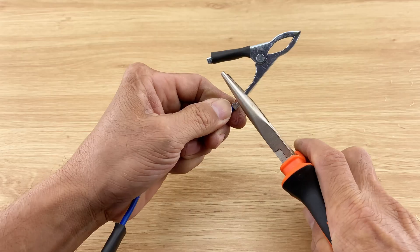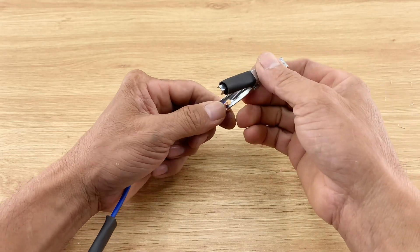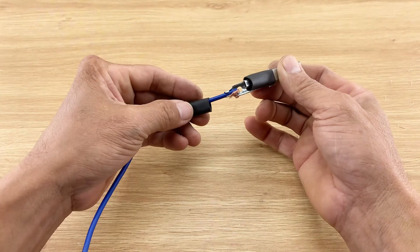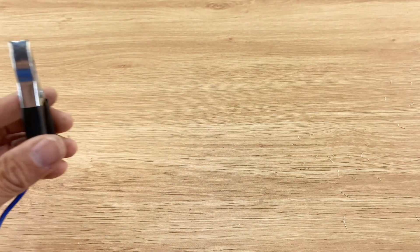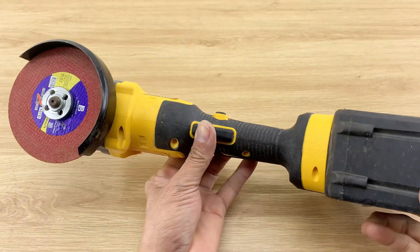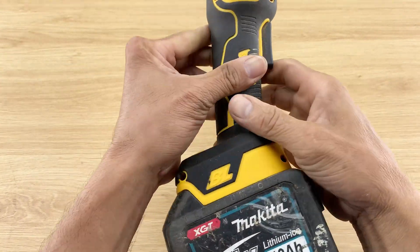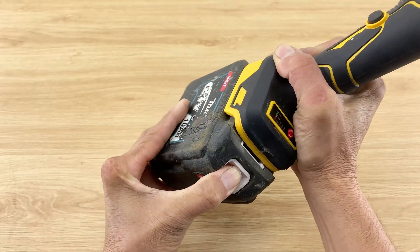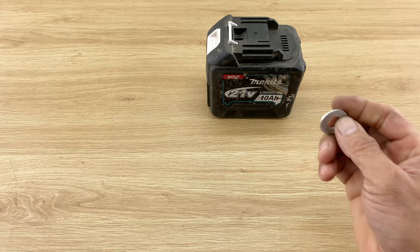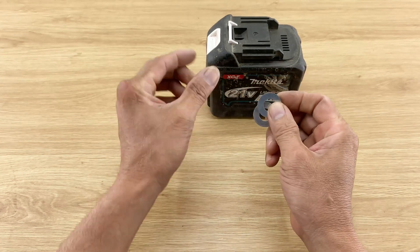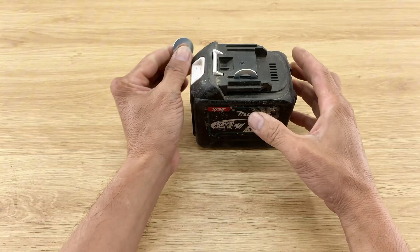This blue wire will serve as our negative connection, completing the circuit once connected to a power source. Now for the power source, I'm using an angle grinder battery.